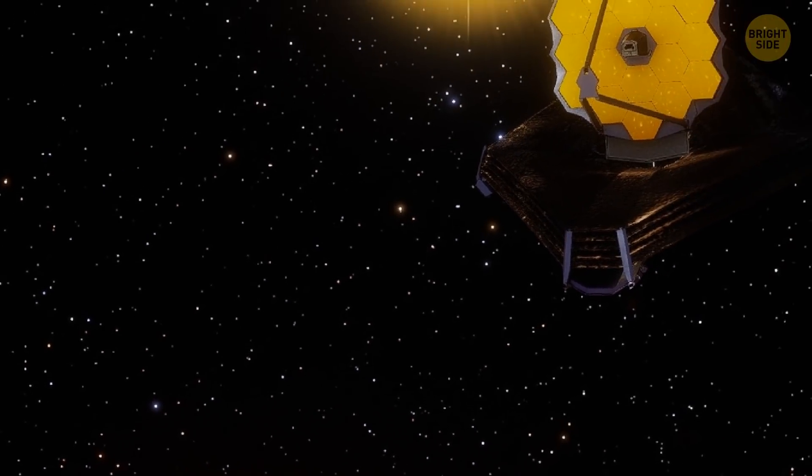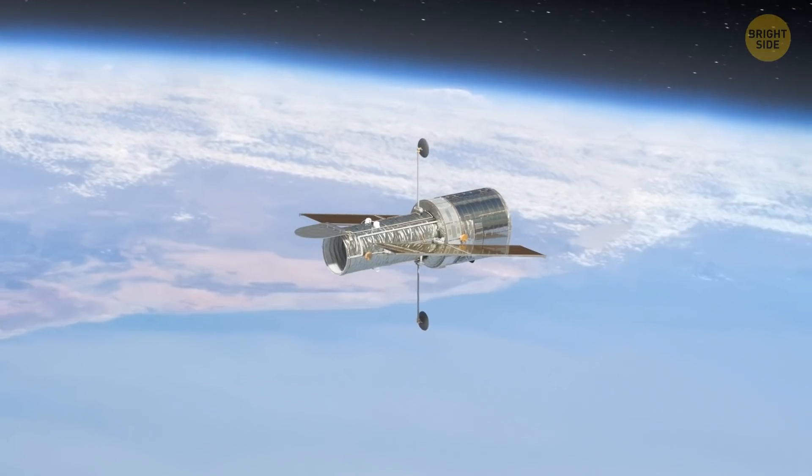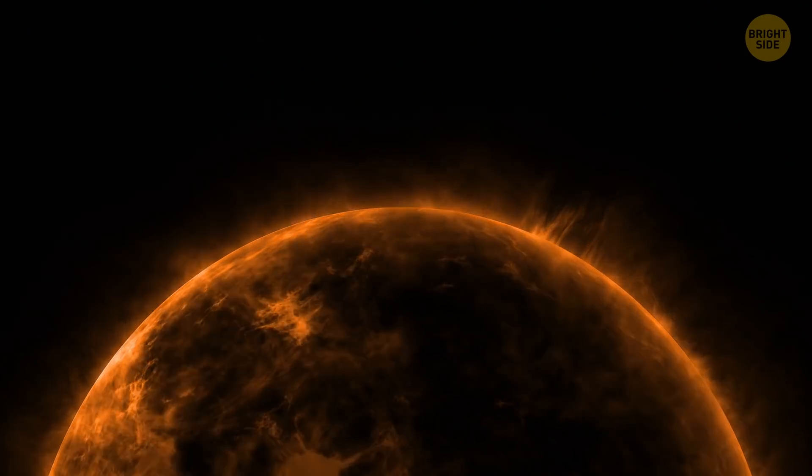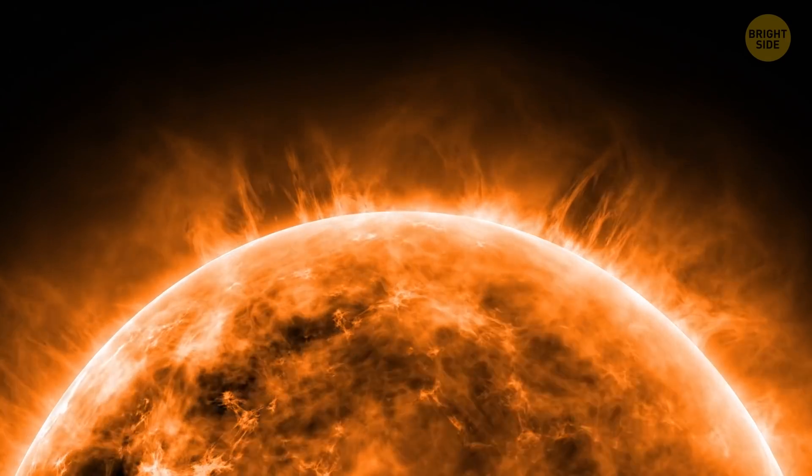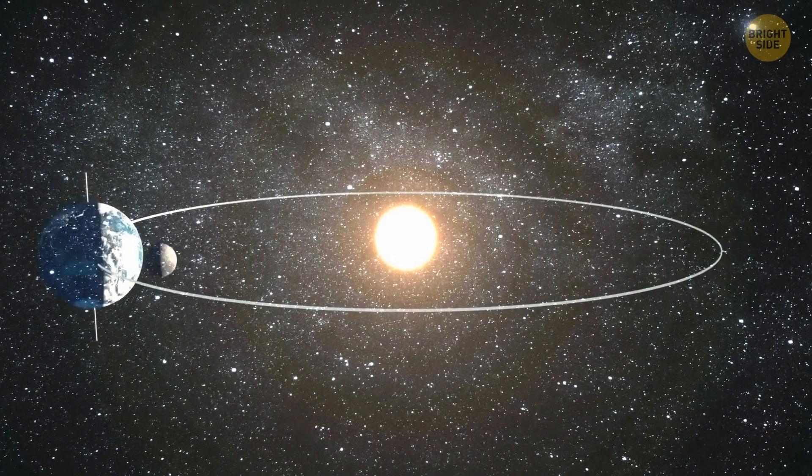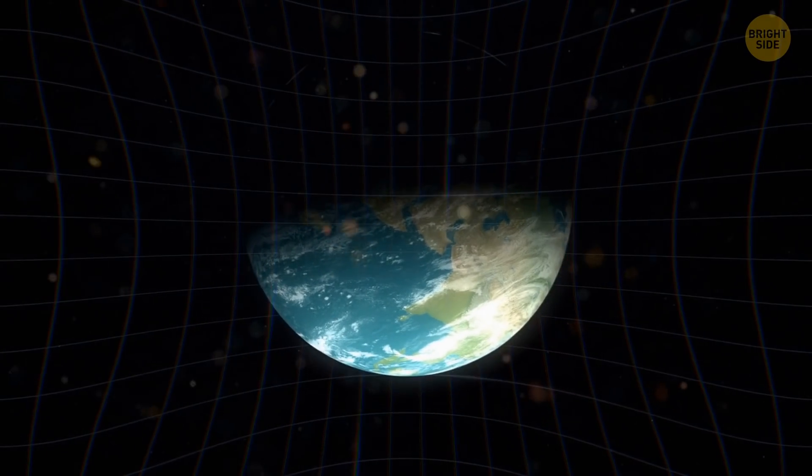Presently, the JWST is parked in its permanent location. Unlike the Hubble Space Telescope, which orbits the Earth, the James Webb Space Telescope orbits the Sun. It orbits the Sun at one of the gravitational balance points between the Earth-Sun system. It just stays there without having to use much or any fuel to hold its position.